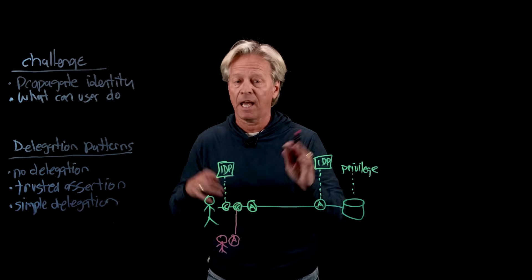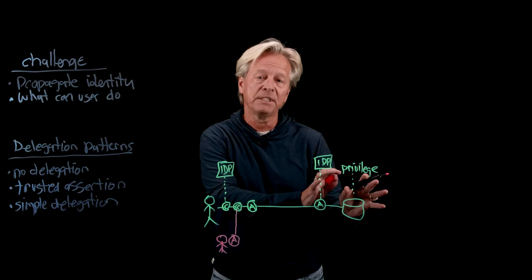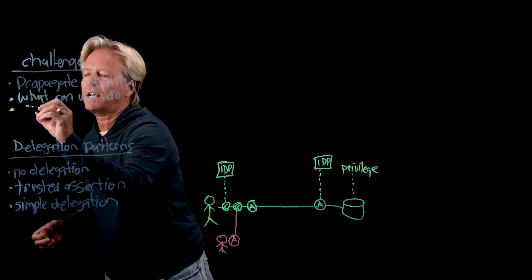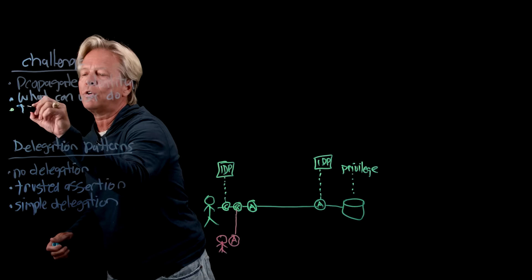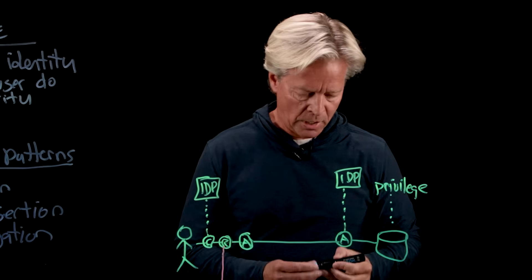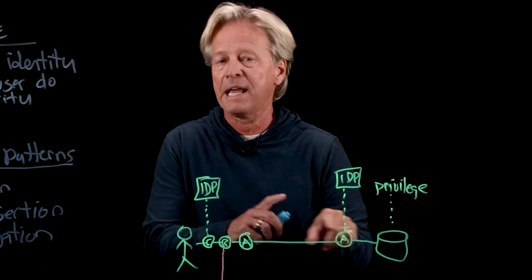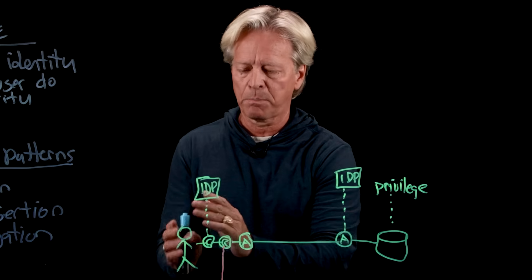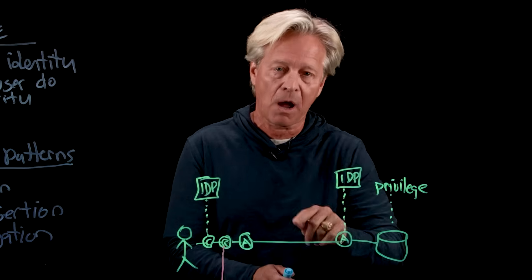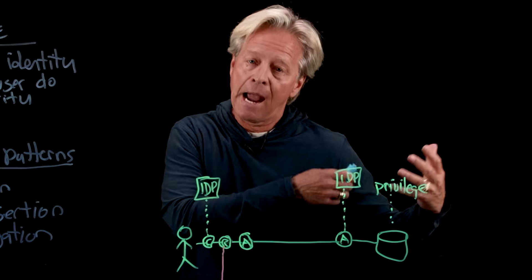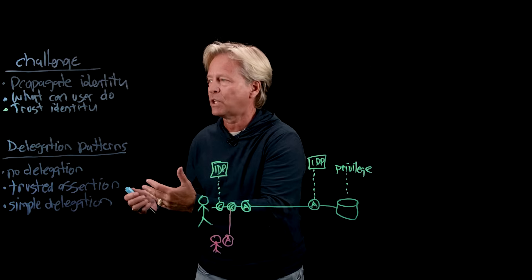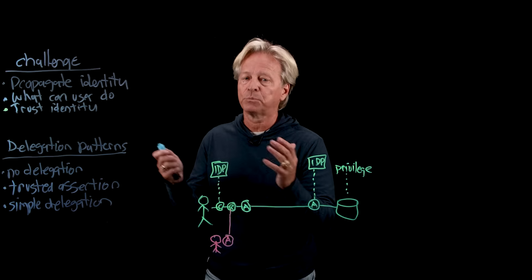If we're just merely propagating the identity from the starting point, how do we prevent someone from inserting themselves and saying, 'I am the identity of this person — now give me back all the stuff that person is entitled to retrieve'? This really starts talking about our next challenge: how do we trust the identity? How does an agent down in this flow know? It has no visibility to where this user came in and originally authenticated. How does it trust that the identity coming through the system is actually the right one?